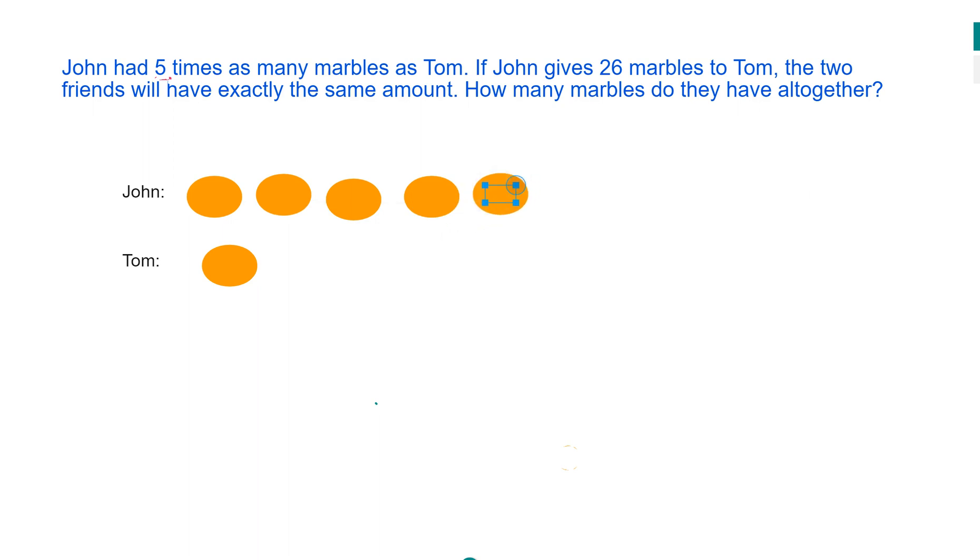So John has five times as many marbles as Tom. If John gives 26 marbles to Tom, the two friends will have exactly the same amount. Having exactly the same amount of marbles will also mean that they have exactly the same amount of counters. So since Tom has only got one, we put two more so each of them have exactly the same amount of counters, which are three each.